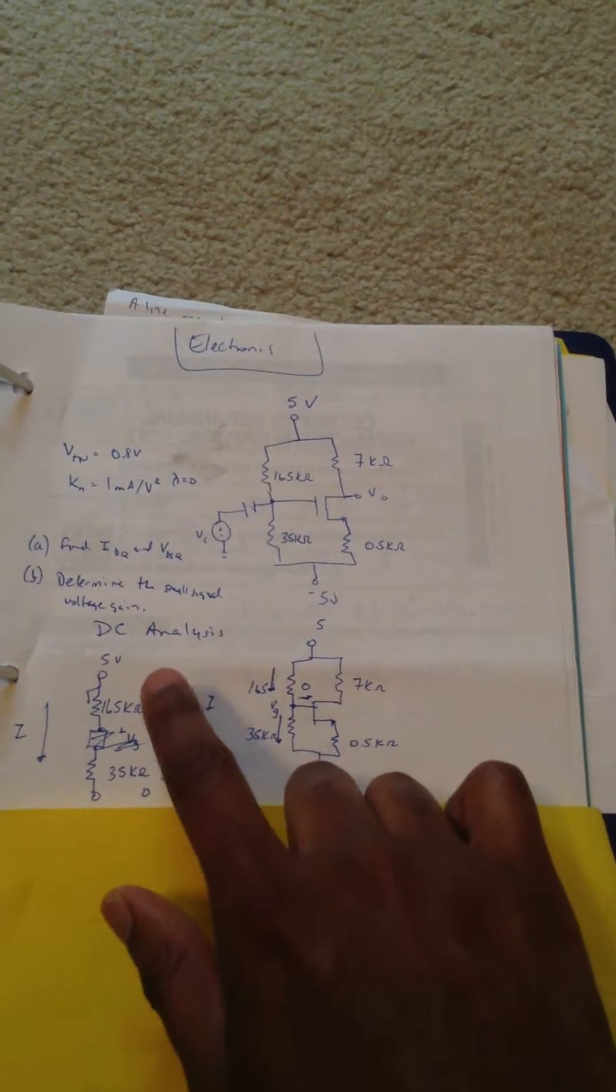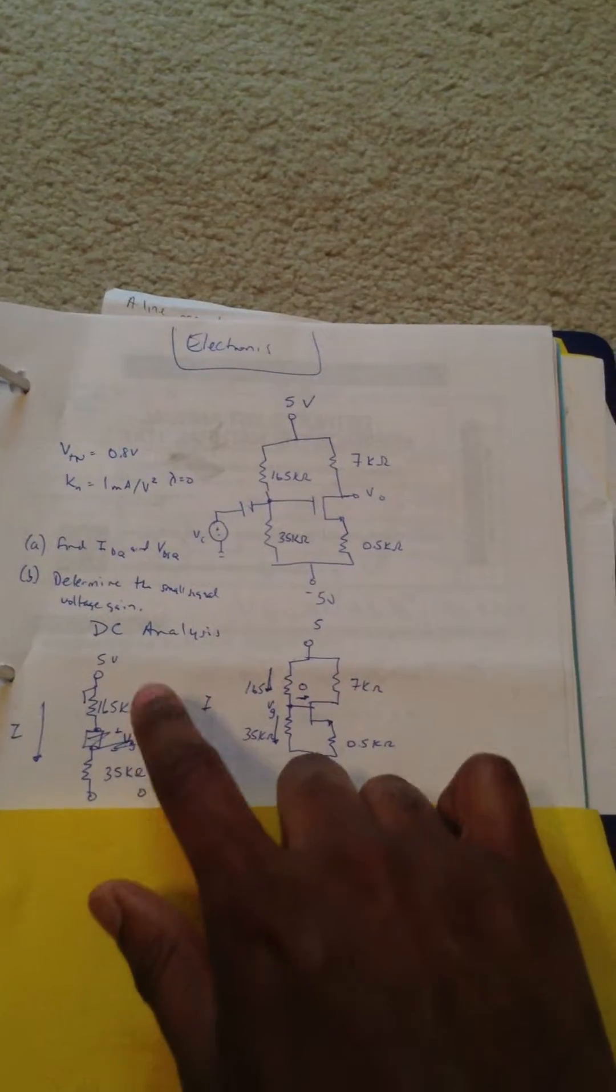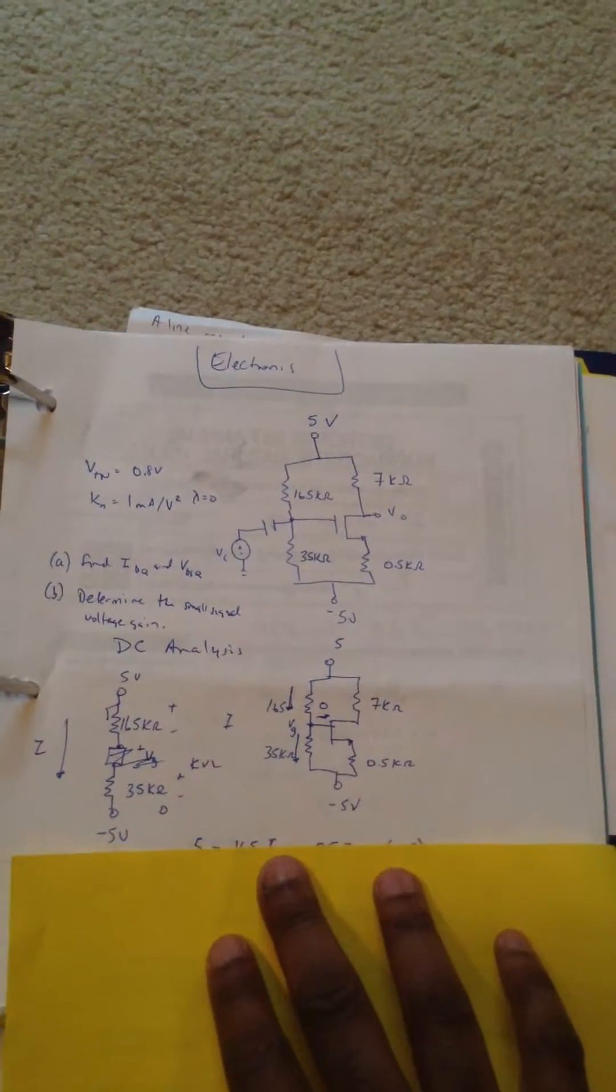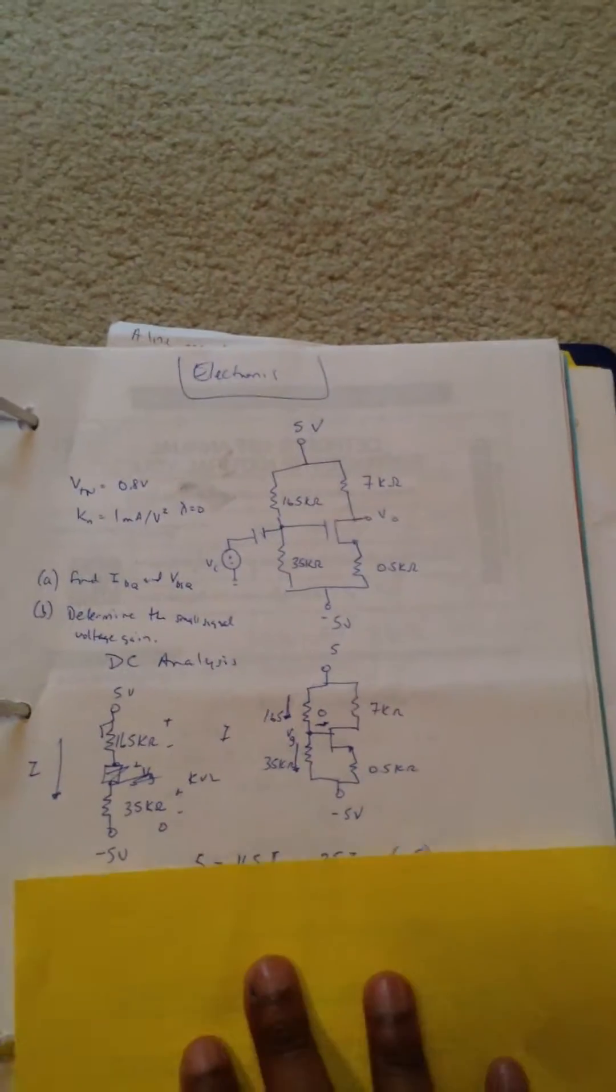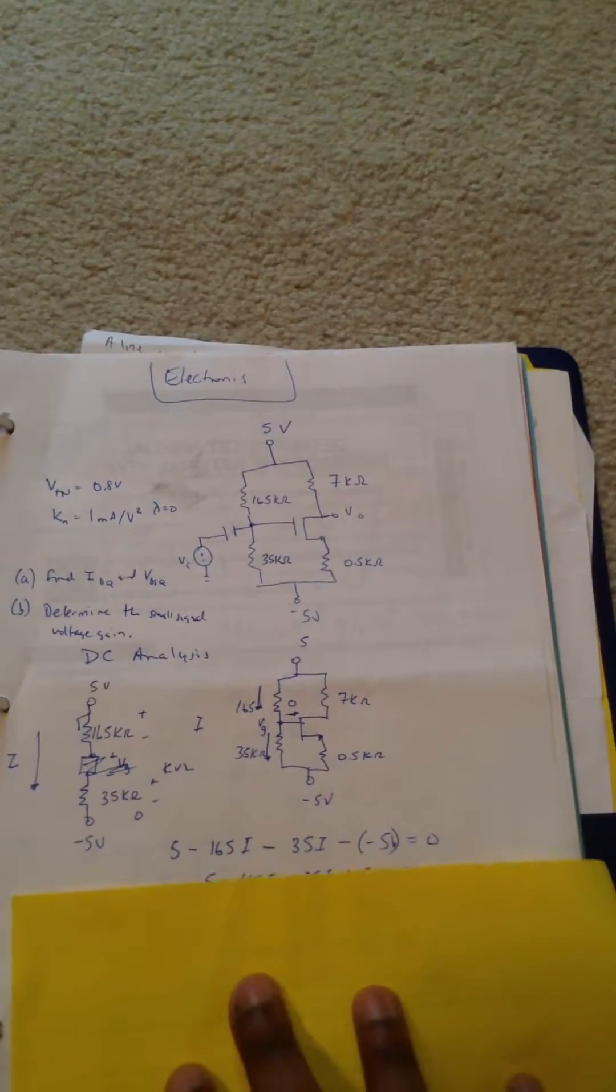Basically, just 5 volts plus two resistors in series and the negative 5 volts here. So we're going to use KVL to solve for current.